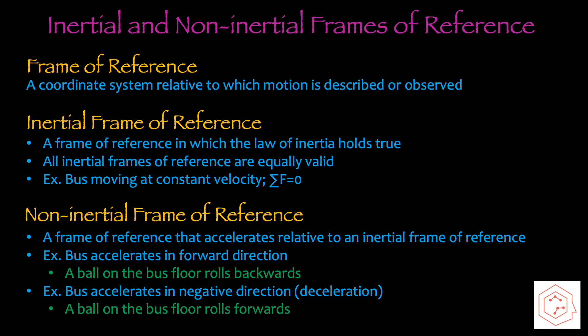For a non-inertial frame of reference, this is a frame of reference that accelerates relative to an inertial frame of reference. First example: a bus accelerates in the forward direction. If there was a ball sitting on the floor of the bus, the ball would roll backwards due to the forwards acceleration of the bus. A second example is a bus accelerating in the negative direction — backwards — also known as deceleration. That same ball on the bus floor would, in this case, roll forwards.